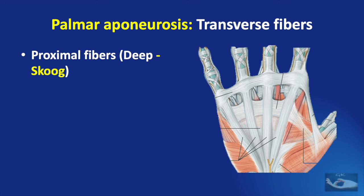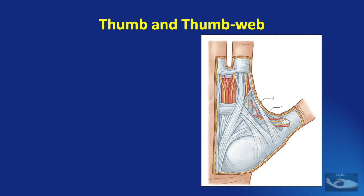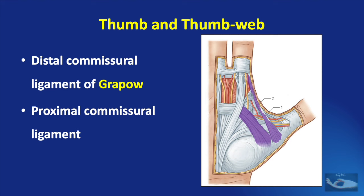The transverse fibres of the palmar aponeurosis can be divided into two groups. The proximal transverse fibres are deeper and are sometimes known as Skoog's ligament. The distal fibres are superficial and lie under the web spaces of the fingers; they are known as the natatory ligament. The fascial system of the base of the thumb and thumb web consists of the distal commissural ligament of Grapow, which gives the thumb web its characteristic shape, and the proximal commissural ligament.